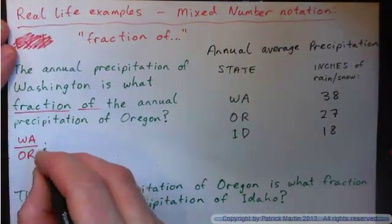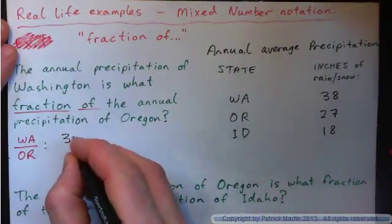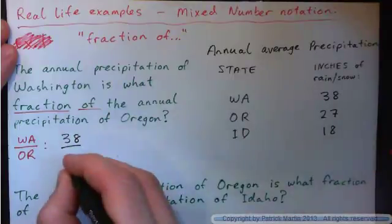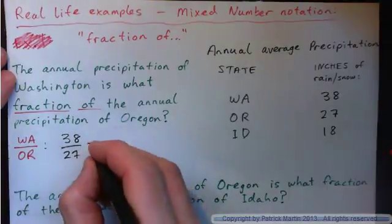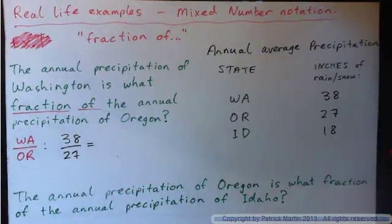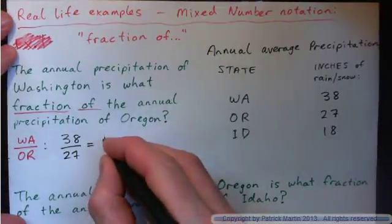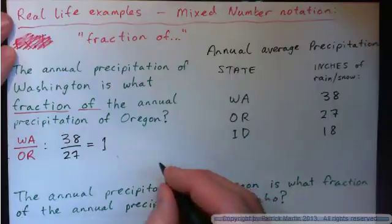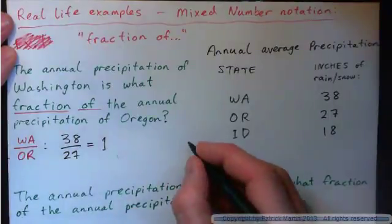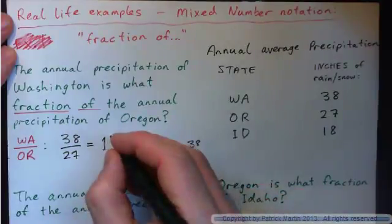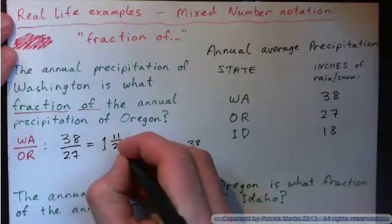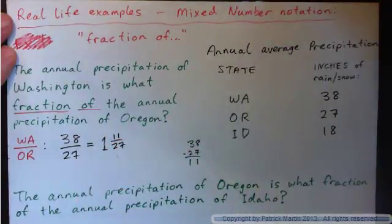So we'll have the Washington number 38 over the Oregon number 27, and that's an improper fraction. We need to turn that into a mixed number. 27 into 38 goes one time, and the remainder: 38 minus 27 — 8 minus 7 is 1, 3 minus 2 is 1 — so the remainder is 11. That gives us 1 and 11/27 as a mixed number.